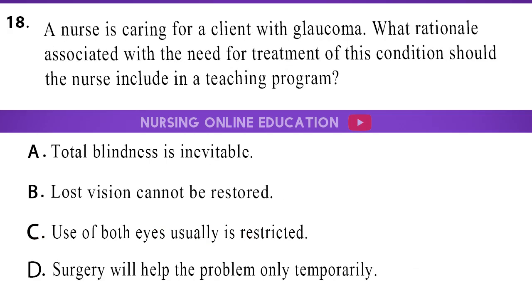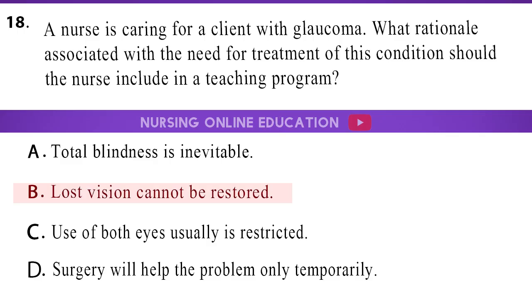Question 18. A nurse is caring for a client with glaucoma. What rationale associated with the need for treatment of this condition should the nurse include in a teaching program? A. Total blindness is inevitable. B. Lost vision cannot be restored. C. Use of both eyes usually is restricted. D. Surgery will help the problem only temporarily. The answer is option B: Lost vision cannot be restored.